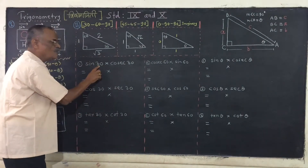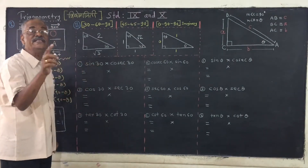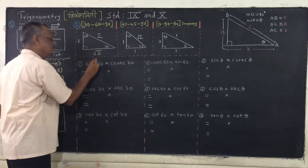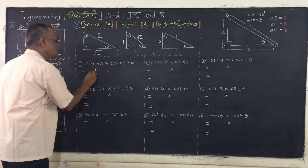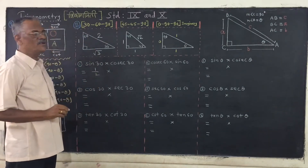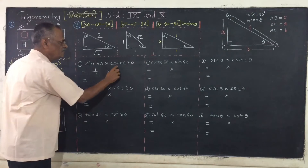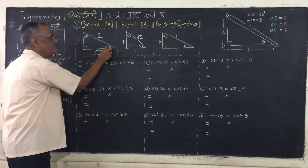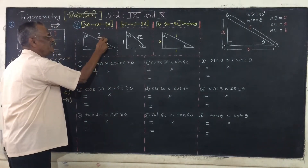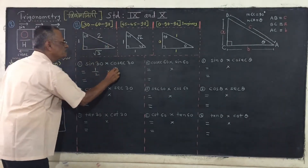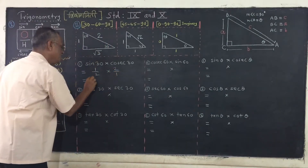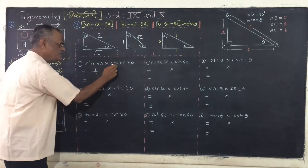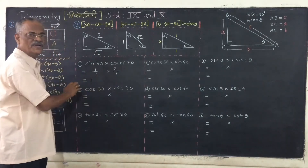Substitute the value of sine 30. Sine 30 is opposite upon hypotenuse, that is 1 upon 2. Now, cosec 30 is hypotenuse upon opposite, that is 2 upon 1. You can see the product: 1 upon 2 into 2 upon 1, you are getting 1.